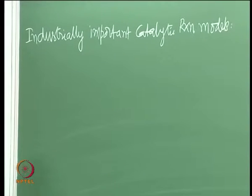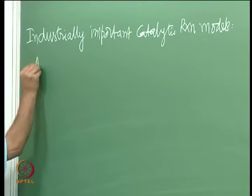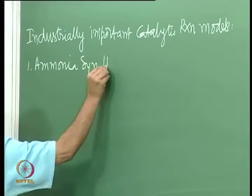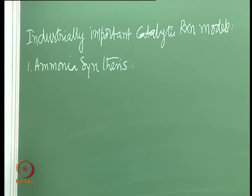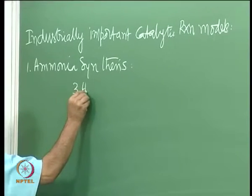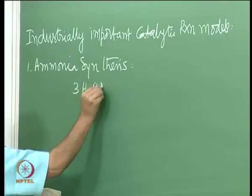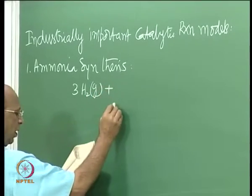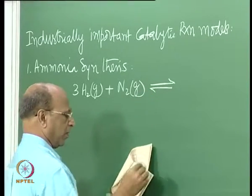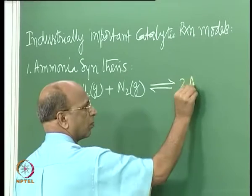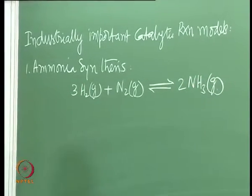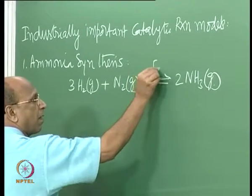The first, very famous one, is ammonia synthesis - all of us know that. The stoichiometric equation is: 3 H₂ (gas) + N₂ (gas) giving us 2 NH₃ (gas). The catalyst is iron.